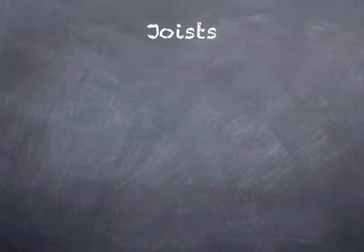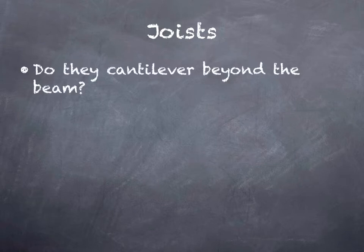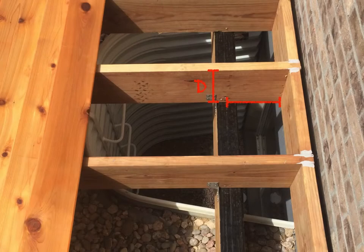The first thing that most people worry about when it comes to joists is what their maximum span can be. Joists are now covered in the 2015 IRC for the first time. The way this table is established for maximum joist span, the first question always has to be: do the joists cantilever beyond the beam? Is the deck designed so that the joists would cantilever beyond the beam, like you see in this photo?